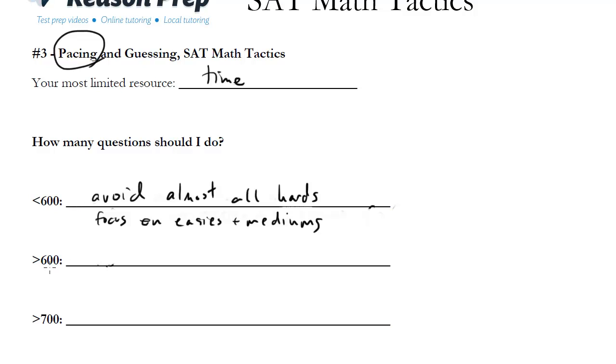If you're going for a 600 or more, which is really between a 600 and a 700, now you're going to start to slowly add in the hards. And this is of course assuming that you've mastered the eases and mediums.